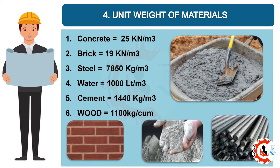Four: unit weight of materials. Concrete = 25 kN/m³. Brick = 19 kN/m³. Steel = 7850 kg/m³. Water = 1000 liters/m³. Cement = 1440 kg/m³. Wood = 1100 kg/m³.